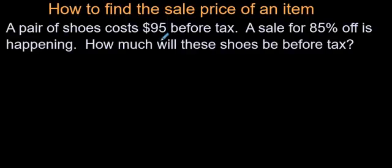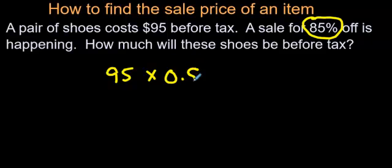Next question. The shoes are still $95, but this time, massive sale. 85% off. That is crazy. Let's check out how good that sale is. You're going to go 95, change 85% into a decimal. You get 0.85.